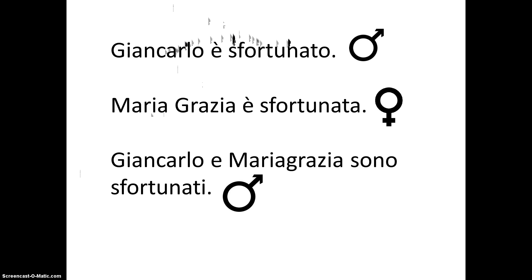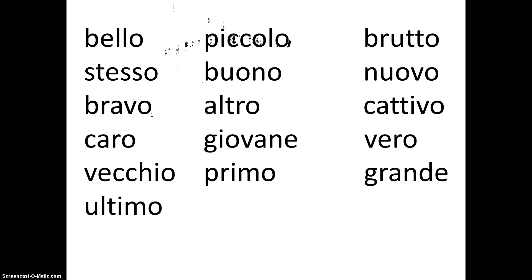While adjectives are generally placed after the noun in Italian, we will now look at some special adjectives that precede the noun instead. This list of adjectives would usually come before nouns: bello, piccolo, brutto, stesso, buono, nuovo, bravo, altro, cattivo, caro, giovane, vero, vecchio, primo, grande, ultimo.